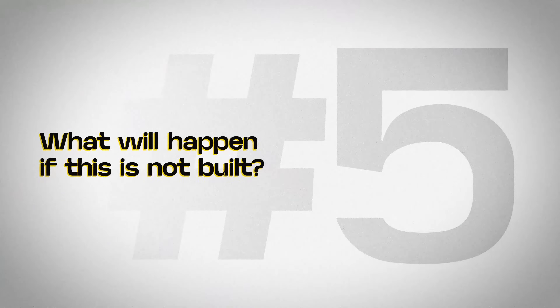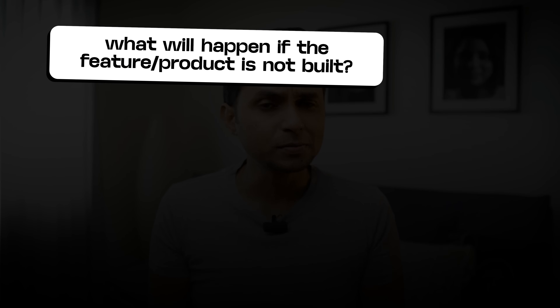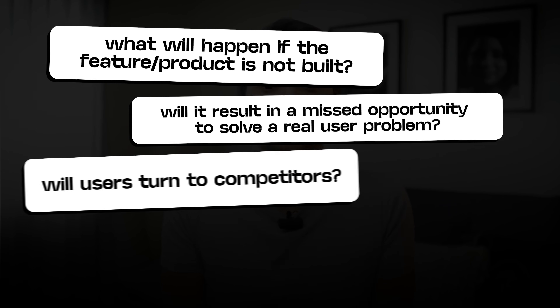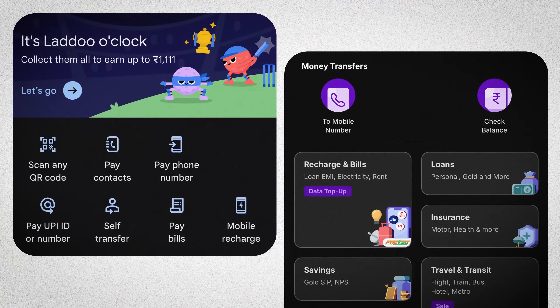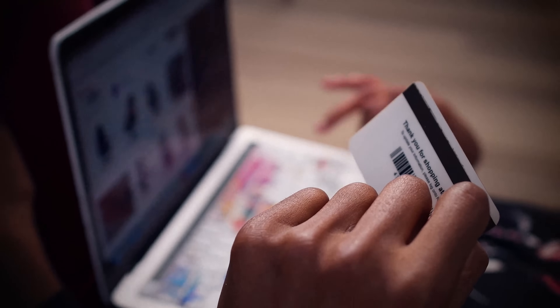Question number five: what will happen if this is not built? This might sound counterintuitive, but this question actually helps you assess the importance and urgency of the project. It forces you to think about the consequences of not creating a particular feature or the entire product itself. Will it result in a missed opportunity to solve a real user problem? Will users turn to competitors? For example, imagine you're designing a banking app and decide not to build an instant fund transfer feature. Without this capability, users may experience frustration and resort to other banking apps that offer quick, real-time transfers — significantly affecting user retention and satisfaction. This question helps prioritize the most critical features, clarifies risk, and ensures you're focusing on solving a real problem that matters most to users.